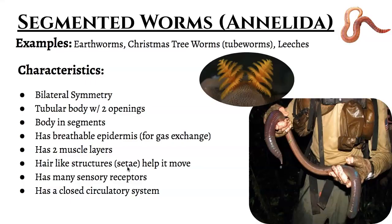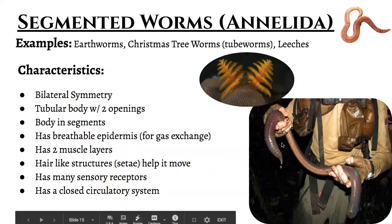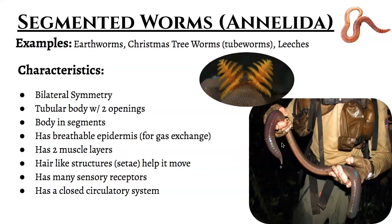All other annelids do have basic body structures very similar to what we're going to be talking about here. These characteristics mainly refer to earthworms, but some could apply to other annelids. First of all, they have bilateral symmetry — just like the flatworms and roundworms we looked at. Bilateral symmetry means it can be cut right down the middle and divided into two equal halves. That's why when we do worm dissections, there's one straight line that goes right down the middle. The worm also has two openings: a mouth and an anus.